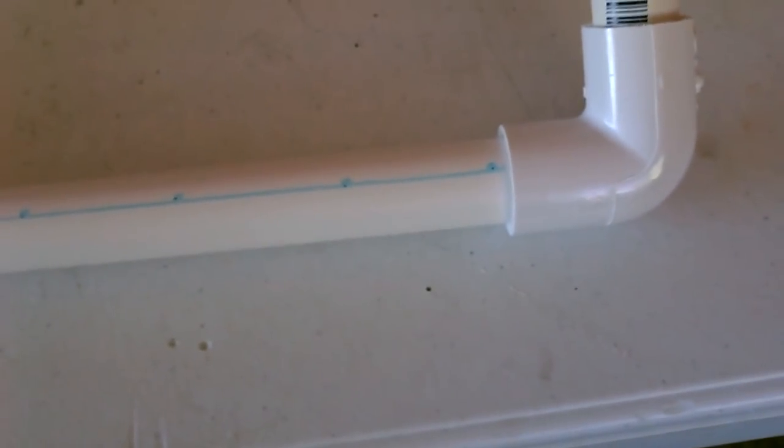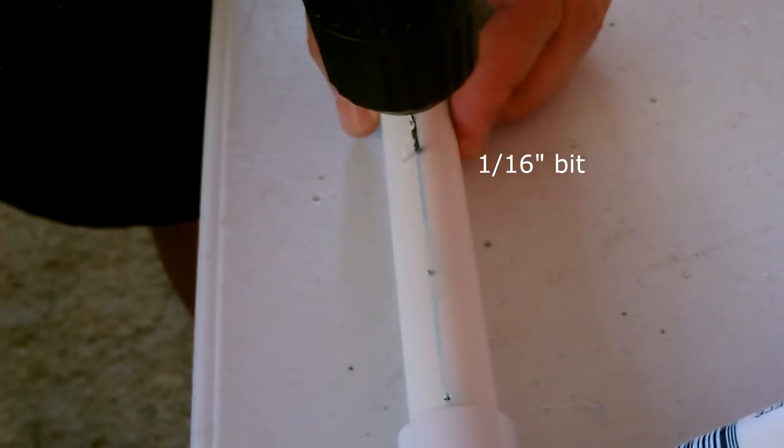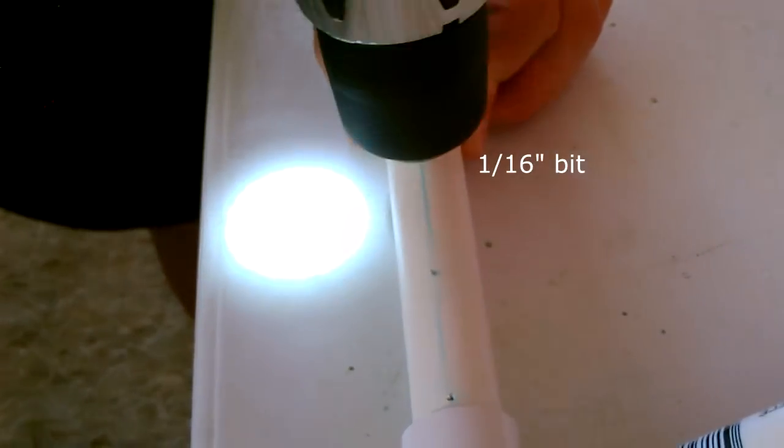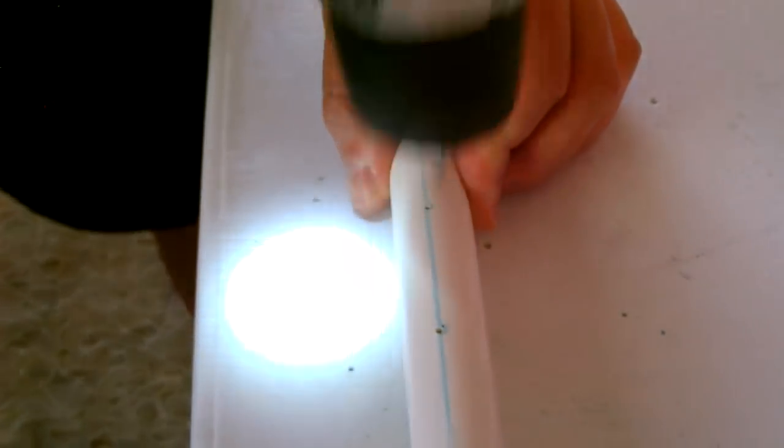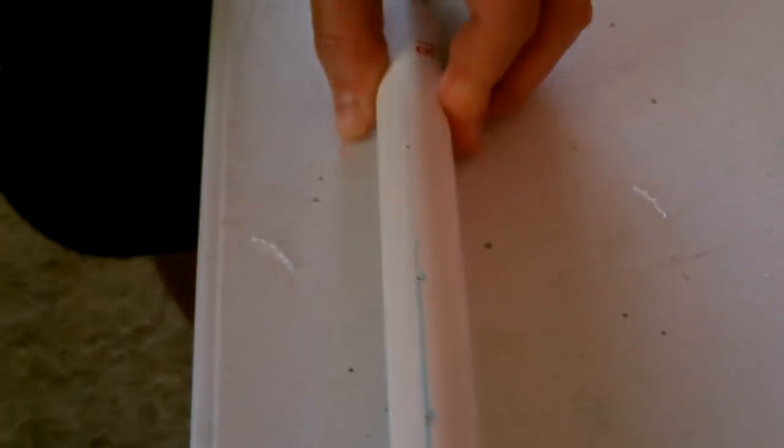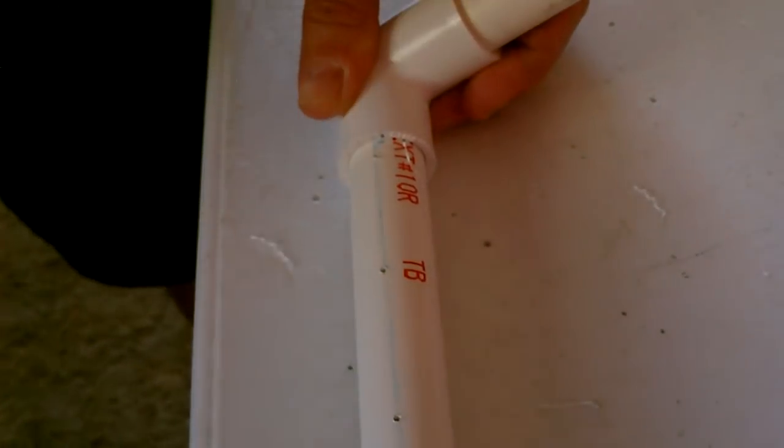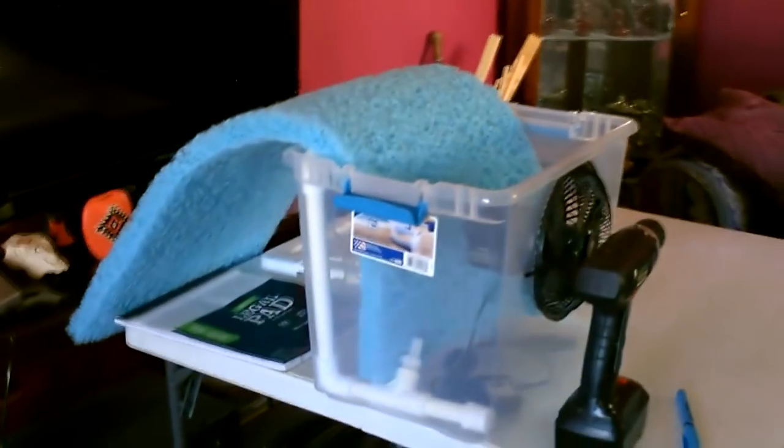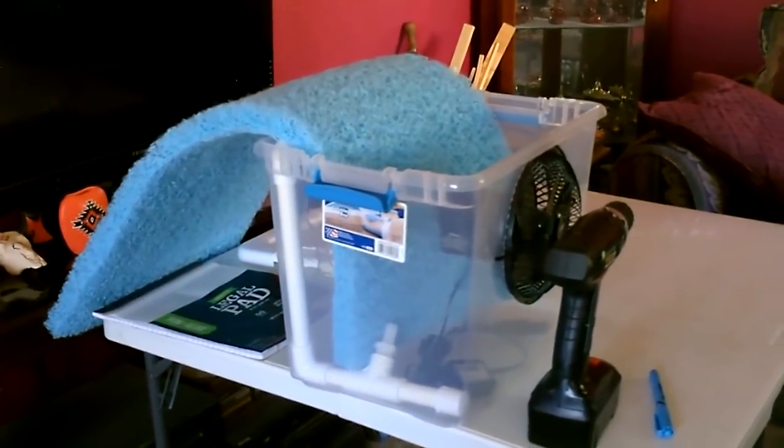Drew a line and marked every inch and a half. Now all we got to do is cut the pad and hang it, then just add the water and the pump.